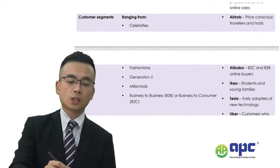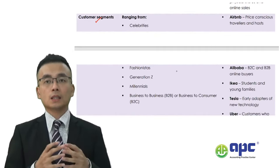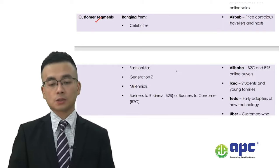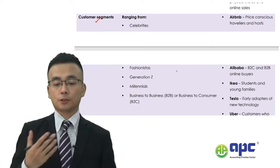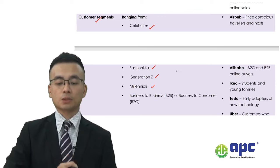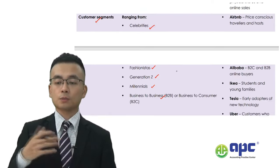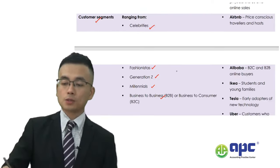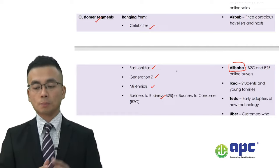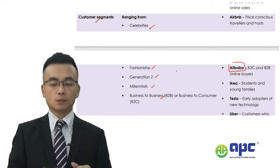Another element is the customer segment — which type of customers you're focusing on. You can segment your market or customers by, for example, Generation Z, Millennials, fashionistas, celebrities, or from B2B to B2C — some corporate clients and some individual clients. For example, Alibaba, the Chinese company, segments their market based on B2C (business to customer) and B2B (business to business) corporate customers.